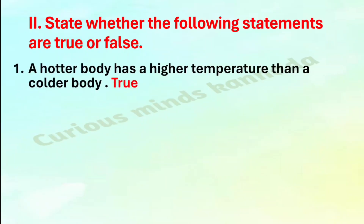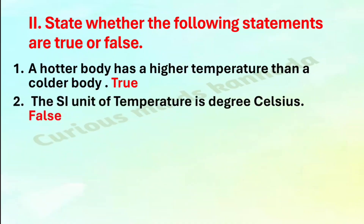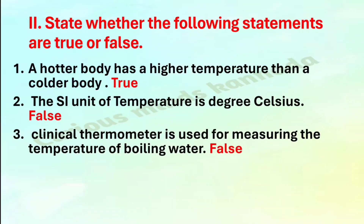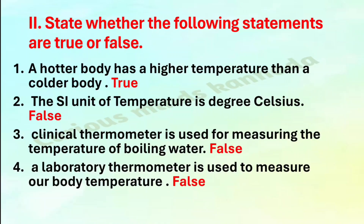Extra — True or False: First, a hotter body has a higher temperature than a colder body — true. Second, the SI unit of temperature is degree Celsius — false. Third, clinical thermometer is used for measuring the temperature of boiling water — false. Fourth, a laboratory thermometer is used to measure our body temperature — false.